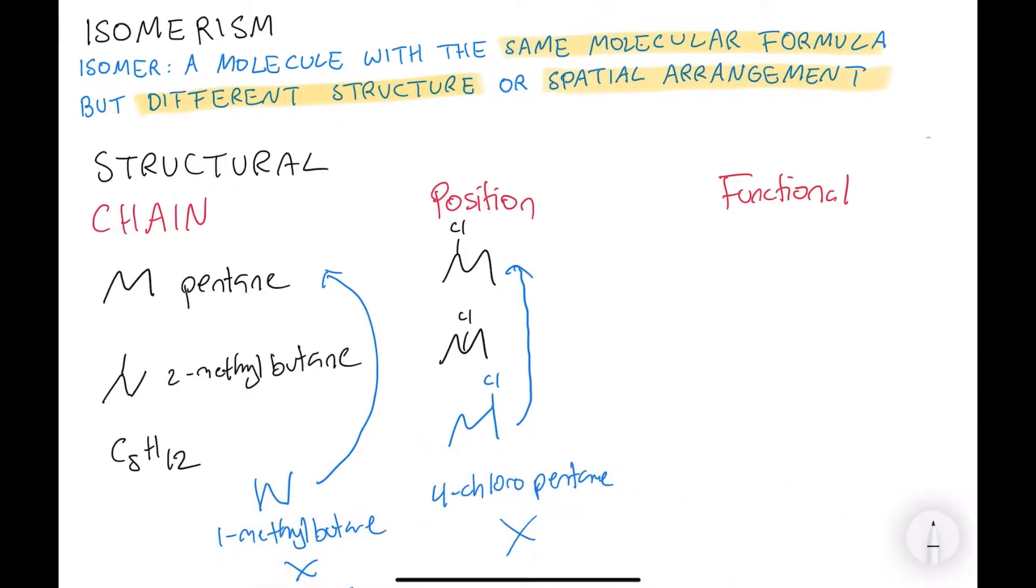And then the last one is functional structural isomerism. And this is where the structure changes in a way that you have a completely new functional group. So an example here is but-2-ene.